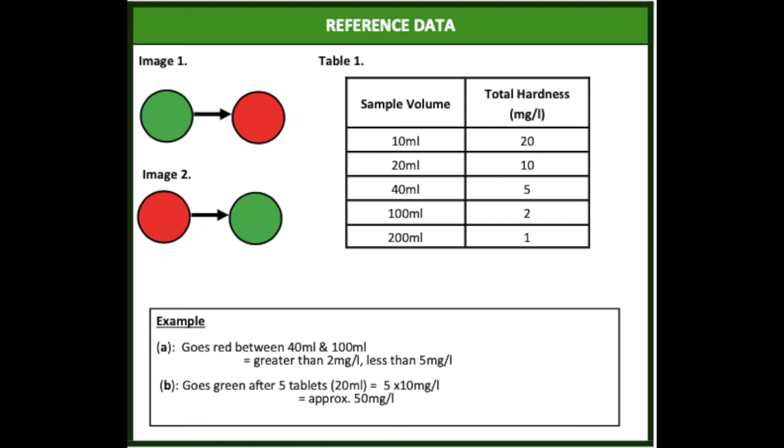If the original 20ml sample goes green from 5 tablets, you'd multiply 5 by 10, giving an approximate total hardness of 50 mg per litre.